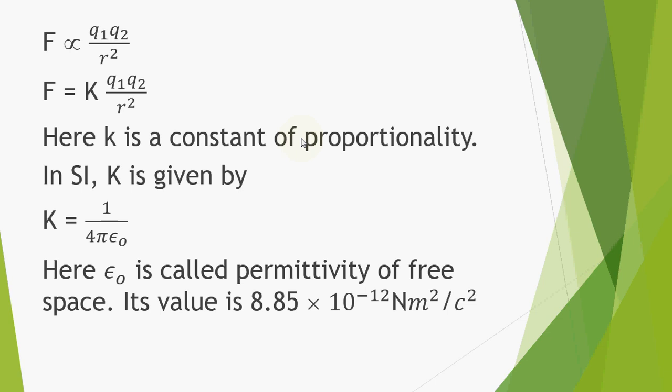Where k is the constant of proportionality and commonly this constant k is known as the electrostatic constant or Coulomb's constant. Its value actually depends on two main factors: Number 1, the system of units which we have used for measuring charges q₁, q₂ and the distance r, and the medium between the two charges. In case of SI units and air or vacuum between the two point charges,